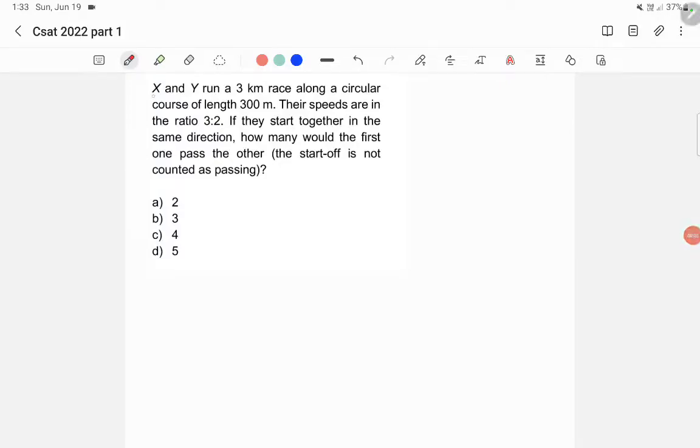In this question, X and Y run a 3 kilometer race along a circular course of length 300 meters. So there is a circular course with a length of 300 meters, and the race is 3 kilometers or 3000 meters. X and Y have to run 10 times through this course to complete the race.